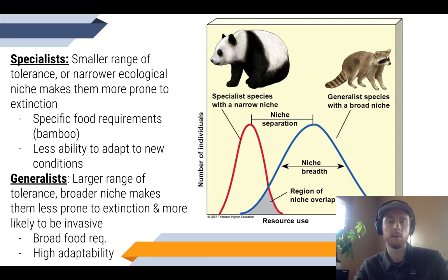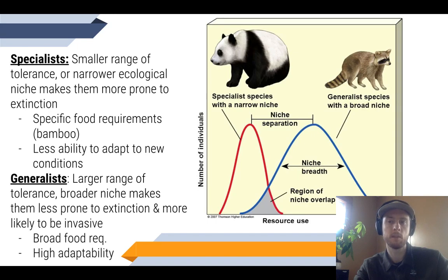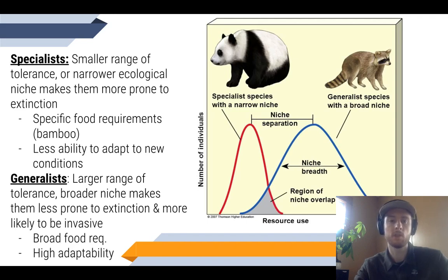The generalist species, on the other hand, have a very large range of tolerance, so they've got a broad niche. This is going to make them less prone to extinction and more likely to be invasive. That's because they have a really broad food availability, and so they can easily switch their diet to a different food source if one of their sources becomes less available. They're very adaptable, but this also makes them very likely to be invasive. If they come to an ecosystem, they're very competitive and can utilize a broad range of resources, which means they compete with a broad range of organisms. So generalists are far more likely to be invasive, where specialists are far more likely to be disturbed by invasive species.